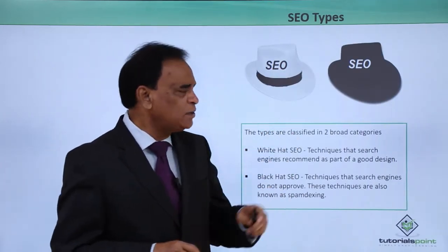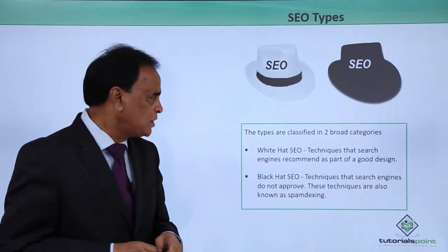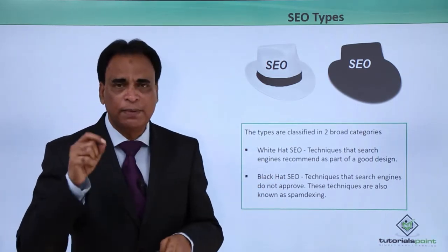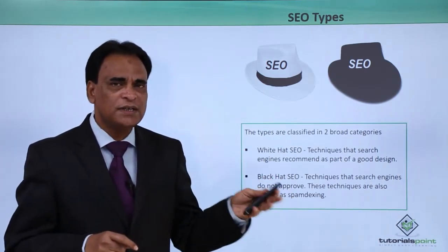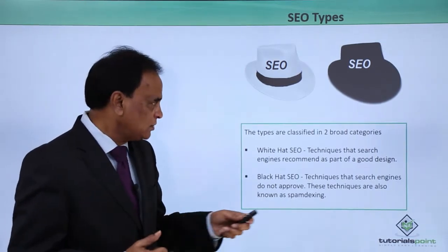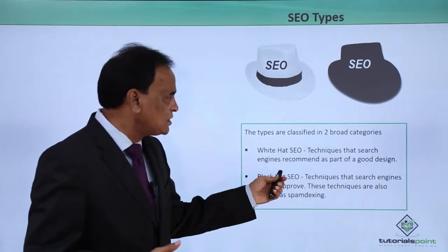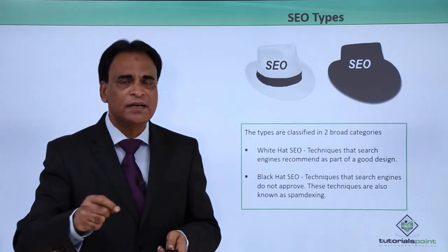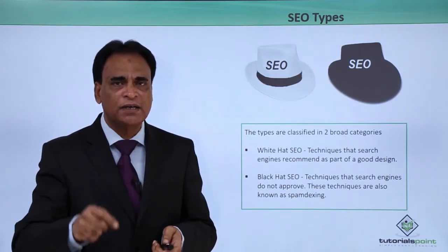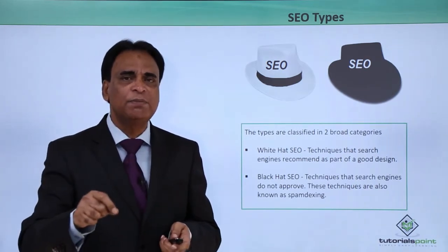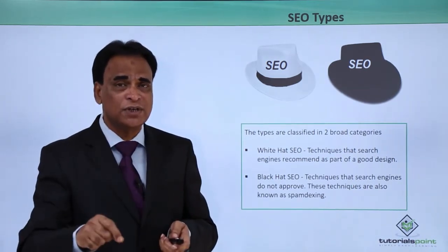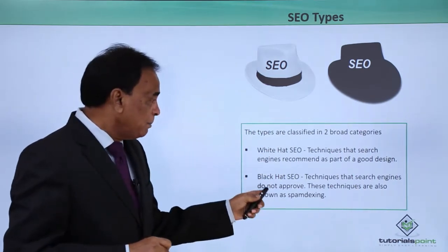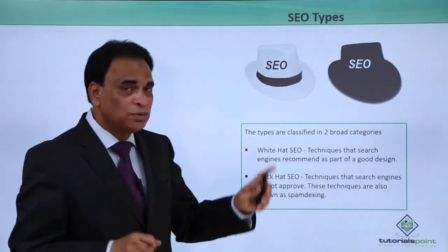SEO types are classified into two broad categories: white hat SEO and black hat SEO. Techniques that are recommended by search engines as part of a good design — those that you implement on your website and follow search engine guidelines — are called white hat SEO.